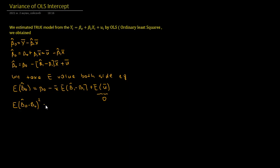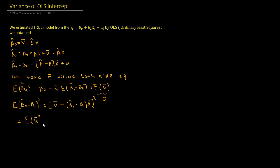Beta 0 hat minus beta 0 squared is equal to: u bar minus beta 1 hat minus beta 1 times x bar, all squared. If we expand the square bracket we will get the expected value of u bar squared...